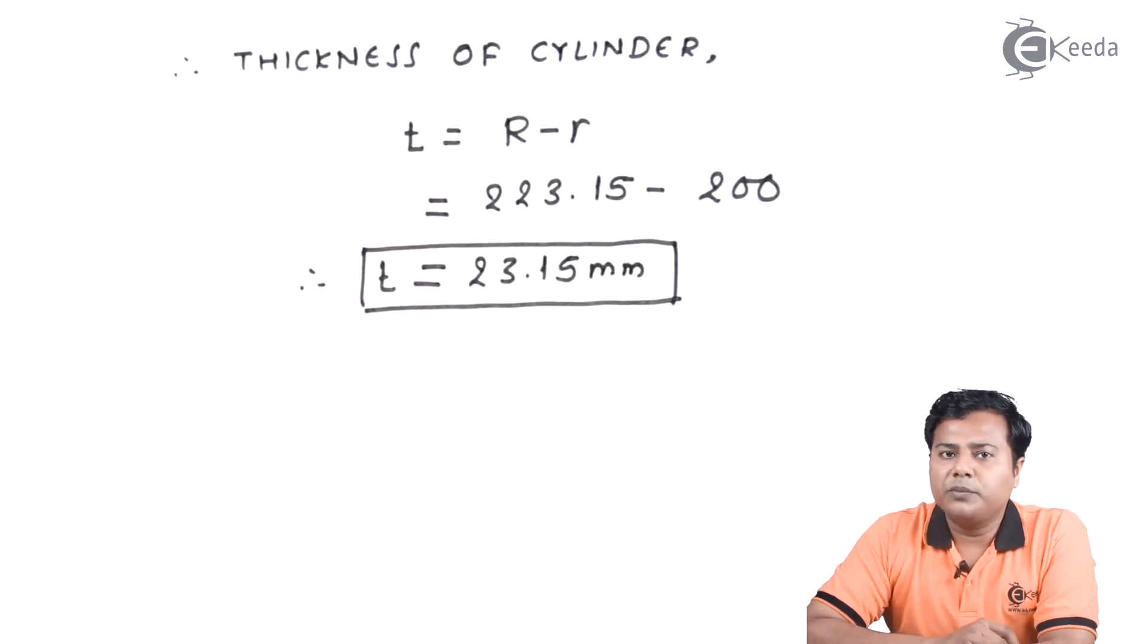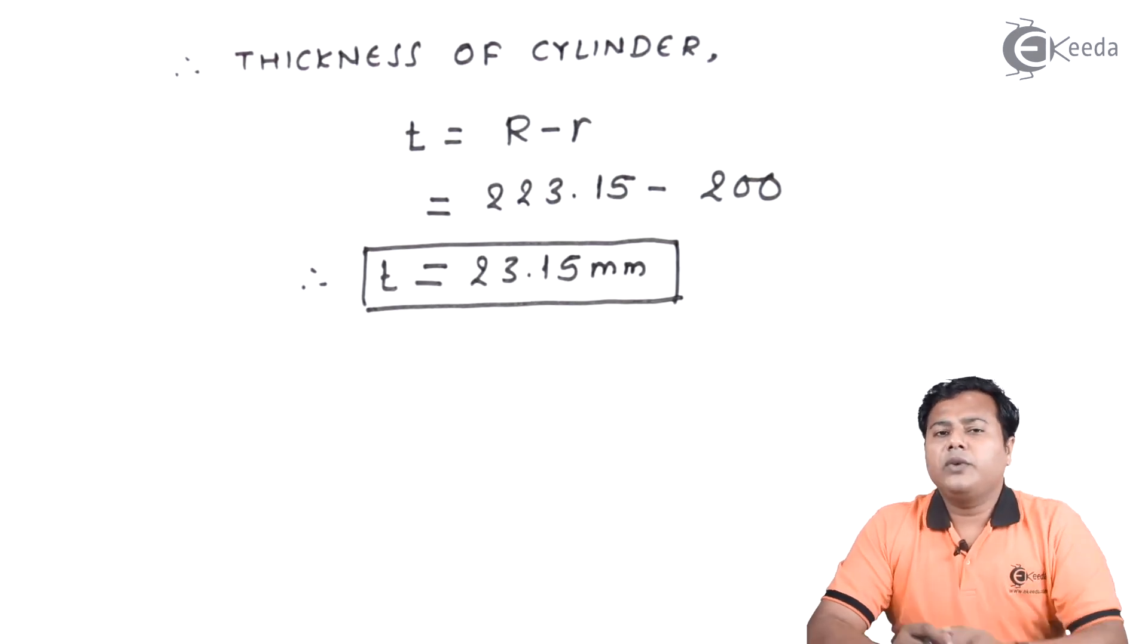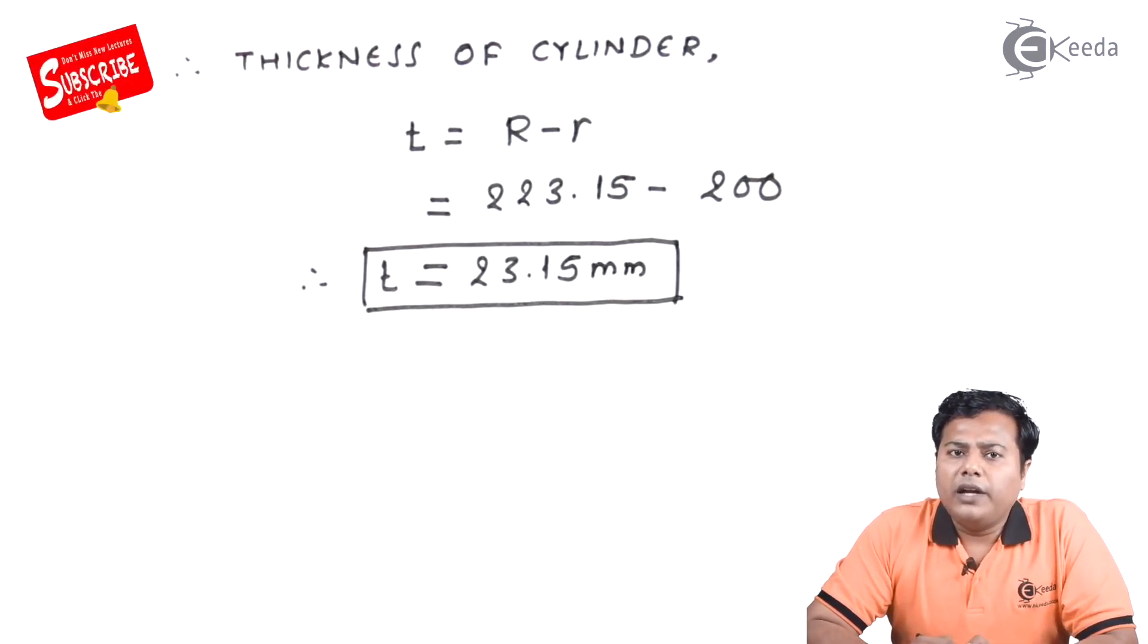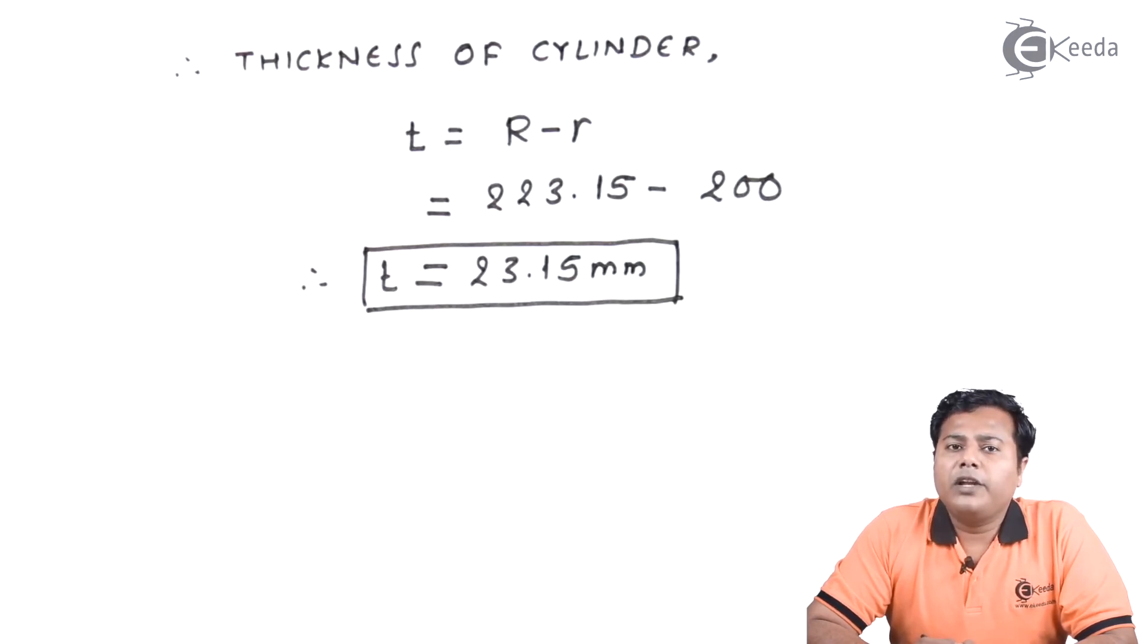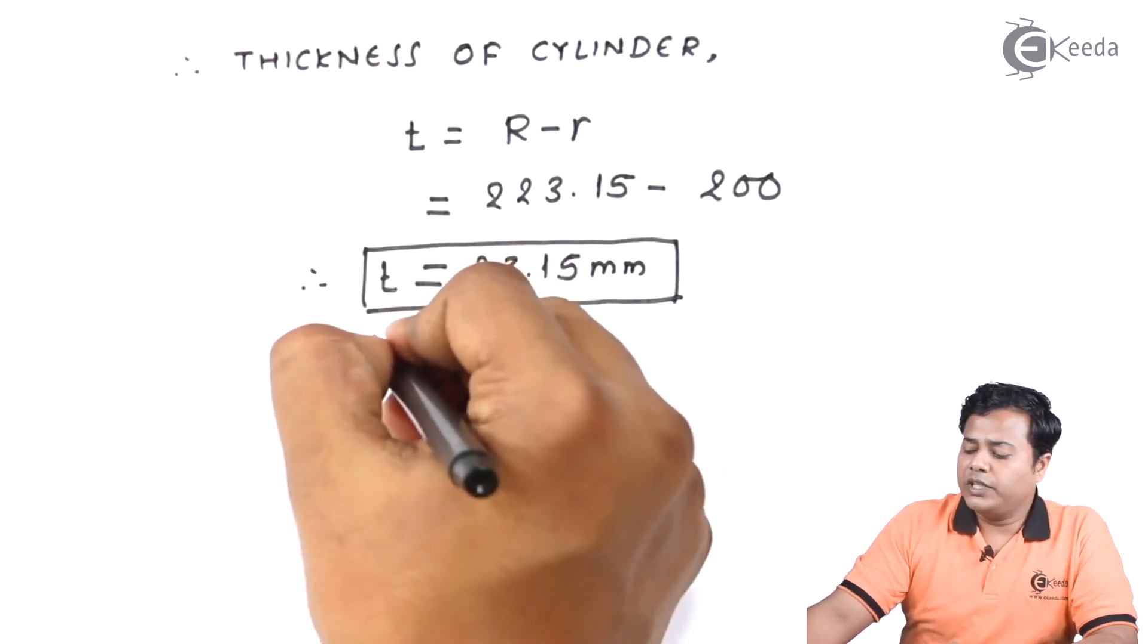So this is the expected answer from the given problem. Let me quickly rewind: we had started with the given value of radius and the internal pressure and the permissible value of the stress. We substituted them in Lemmy's equation, we solved Lemmy's equation simultaneously for the given two values and we found out the values of the factors A and B. We substituted them in Lemmy's equation and then we substituted the value of the given radius at the end. We found out the value of outer radius. Now we know that thickness is basically the outer radius minus inner radius and hence we found out the thickness for the cylinder.